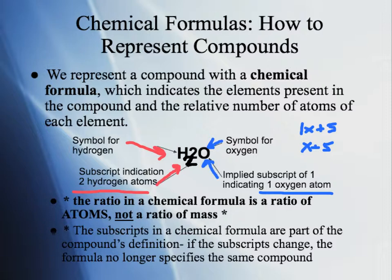The subscript in a chemical formula is part of that compound's definition. If the subscript changes, the compound changes — it is not the same compound. If I change water to H4O, it is not water. If I change it to H2O2, it's not water. If I change it to HO, it's not water. Changing the subscript changes the compound, giving it different properties and different chemistry.